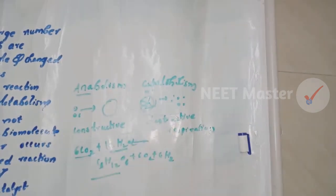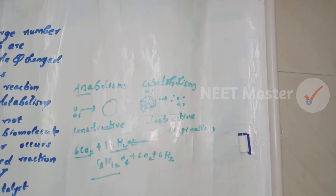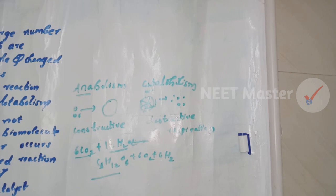Anabolism uses smaller molecules like amino acids, sugars, and fatty acids to build large, complex molecules — this biosynthesis process requires energy. Catabolism breaks down complex molecules into smaller products, releasing energy in the process.